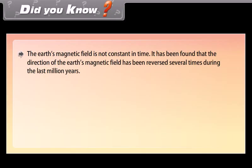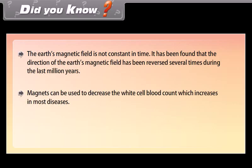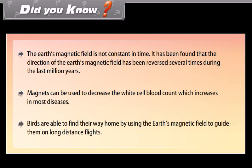Did you know? The Earth's magnetic field is not constant in time — the direction of Earth's magnetic field has been reversed several times during the last million years. Magnets can be used to decrease the white blood cell count, which increases in most diseases. Birds are able to find their way home by using the Earth's magnetic field to guide them on long-distance flights.